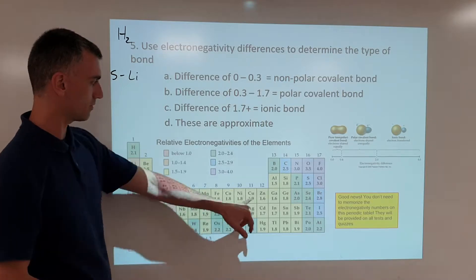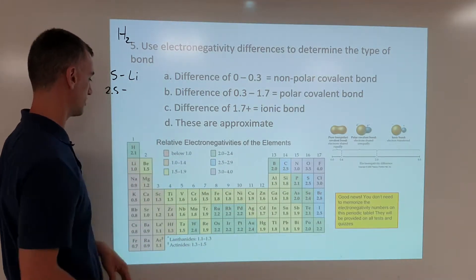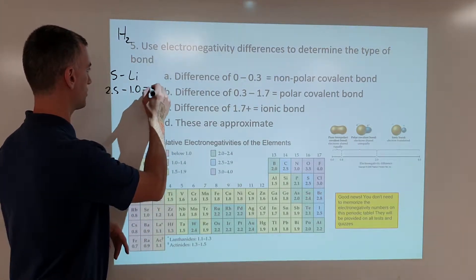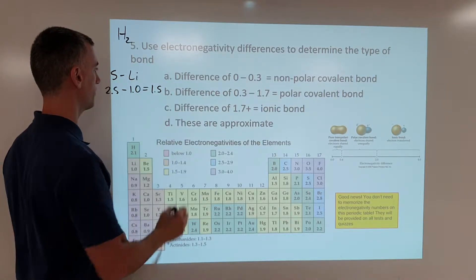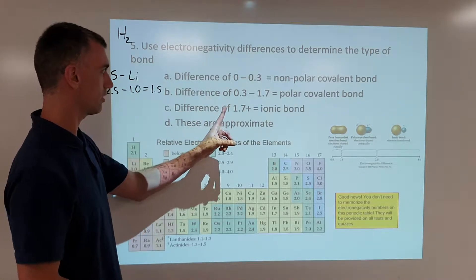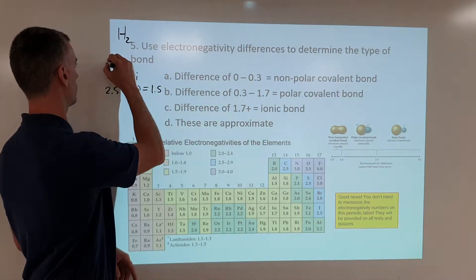what you do is you find the sulfur value, 2.5, and you subtract the other value, 1.0. 2.5 minus 1.0 equals 1.5. So when I find the difference in electronegativity, I look here, I see 1.5 falls in this range. So I'd say this is a polar covalent bond.